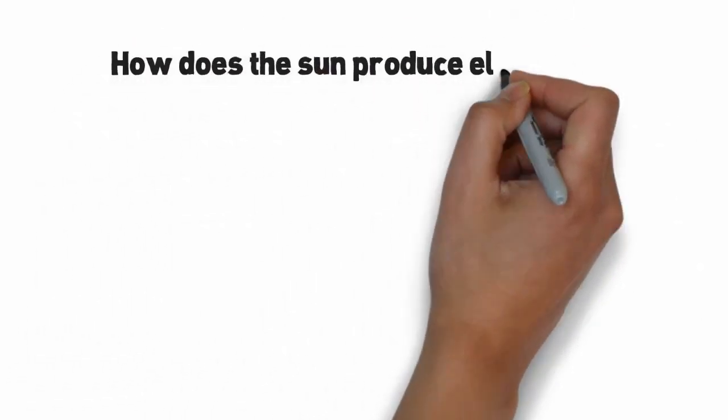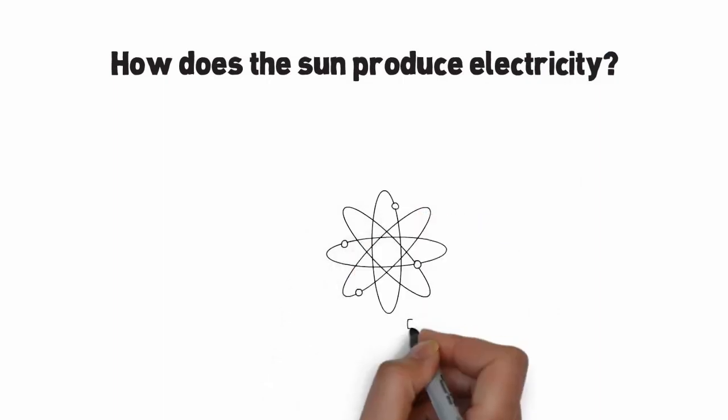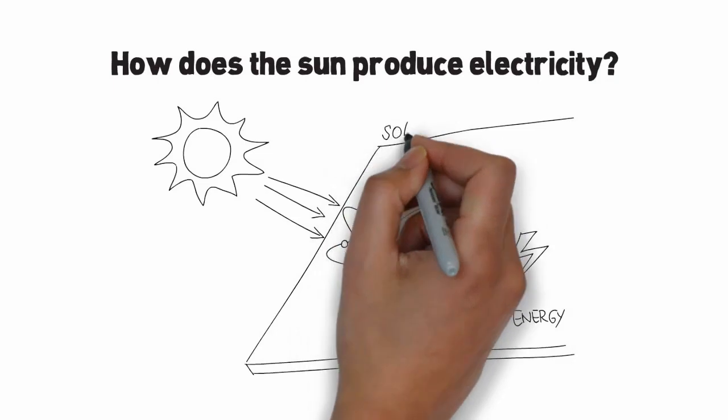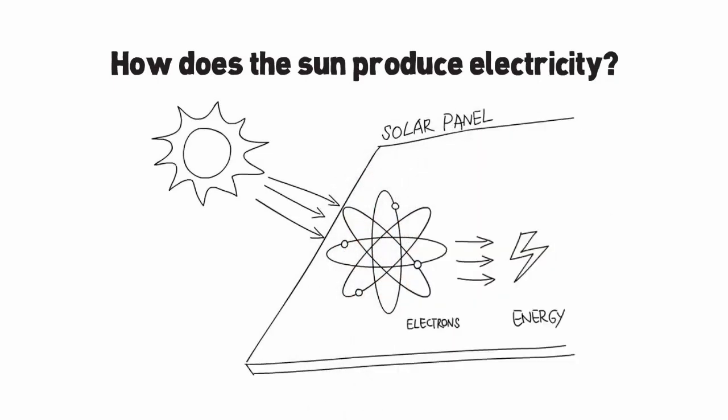How does the sun produce electricity? On a basic level, the radiation from the sun causes the electrons on the panels to be excited and move, which generates energy.